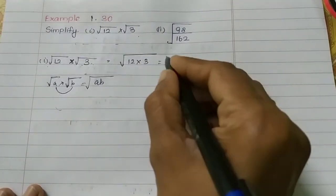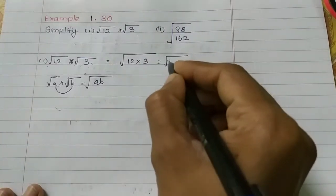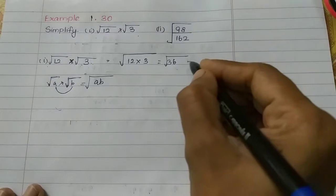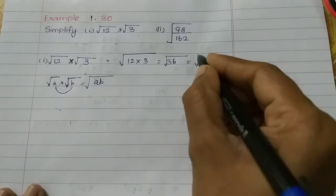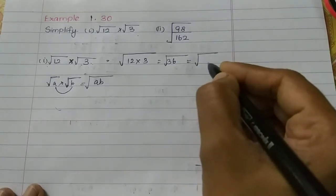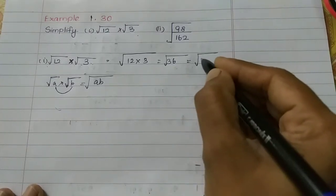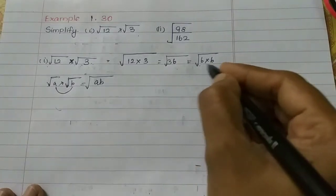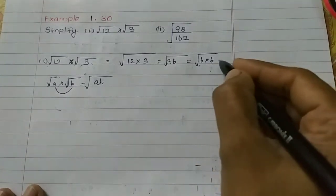Now I will use 36. How many numbers are a perfect square? 6 — 6 times 6 is 36. So 6 comes out of the square root, giving us 6.